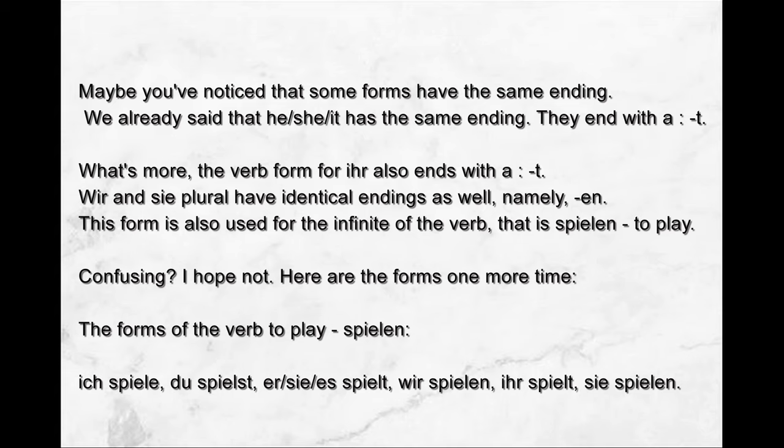Maybe you've noticed that some forms have the same ending. He, she, it all have the same ending — they end with a 't'. What's more, the verb form for ihr also ends with a 't'. Wir and Sie plural have identical endings as well, namely 'en'. This form is also used for the infinitive of the verb, that is, spielen — to play.